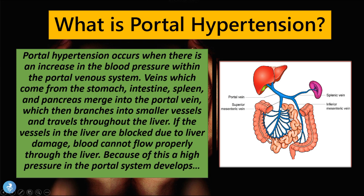The portal vein is important and it is formed by various branches: the splenic vein, the inferior mesenteric vein, and the superior mesenteric vein, which all drain the intestine, spleen, stomach, and pancreas. All of these merge to form the portal vein which then branches into the liver and is filtered by the liver. When vessels within the liver block the flow of blood from the portal venous system, the blood will pool and backflow into all these systems.